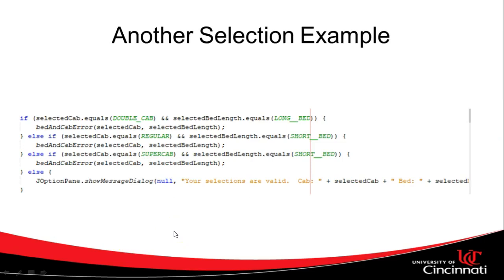So here's a more complex selection example. In this case, we're looking for some validation steps. We need to make sure that we have chosen the correct combination of cab and bed length for a pickup truck. On a compact pickup truck, oftentimes you can't have a double cab where you have four full doors and an extended bed. You can either have the double cab or the extended bed, but not both, because simply the chassis isn't long enough to support both. So in this case, we're going through a series of comparisons.